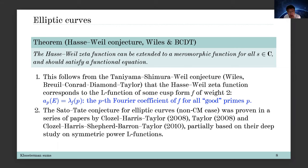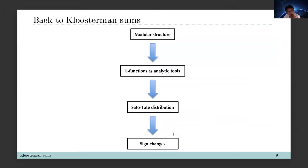The modularity means you can find a suitable holomorphic cusp form such that for all good primes p you can characterize the Frobenius traces by the Fourier coefficients. This is very essential in the proof of Fermat's last theorem and is a starting point for the Sato-Tate conjecture for elliptic curves. In this case we have very powerful symmetric power L-functions as analytic tools to study the Sato-Tate conjecture.